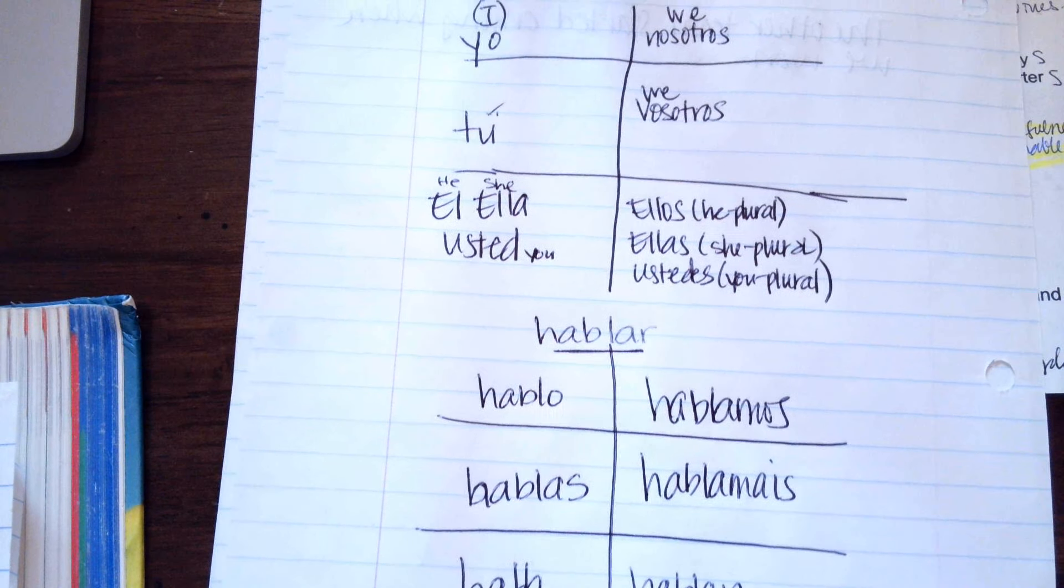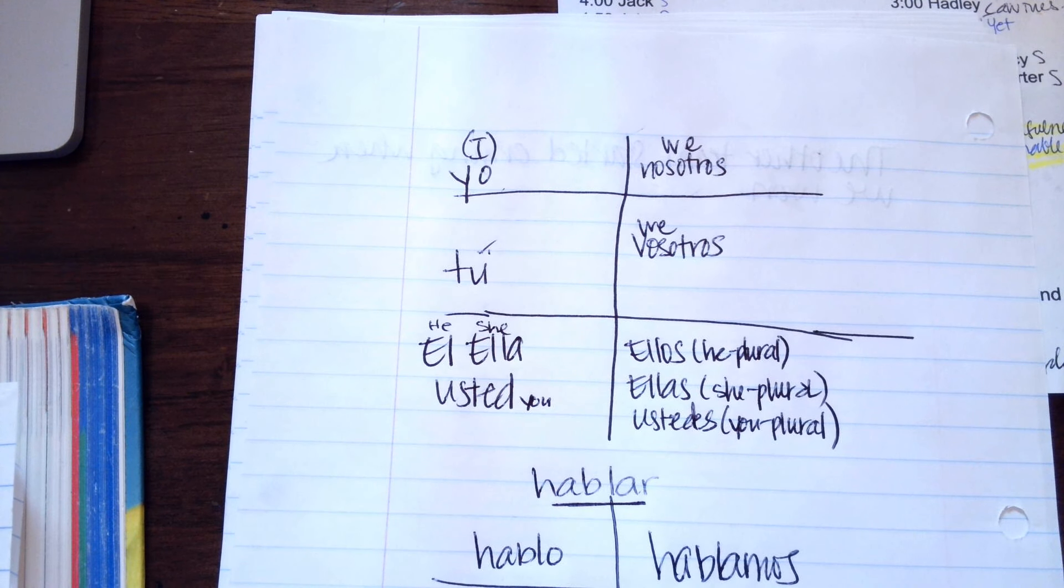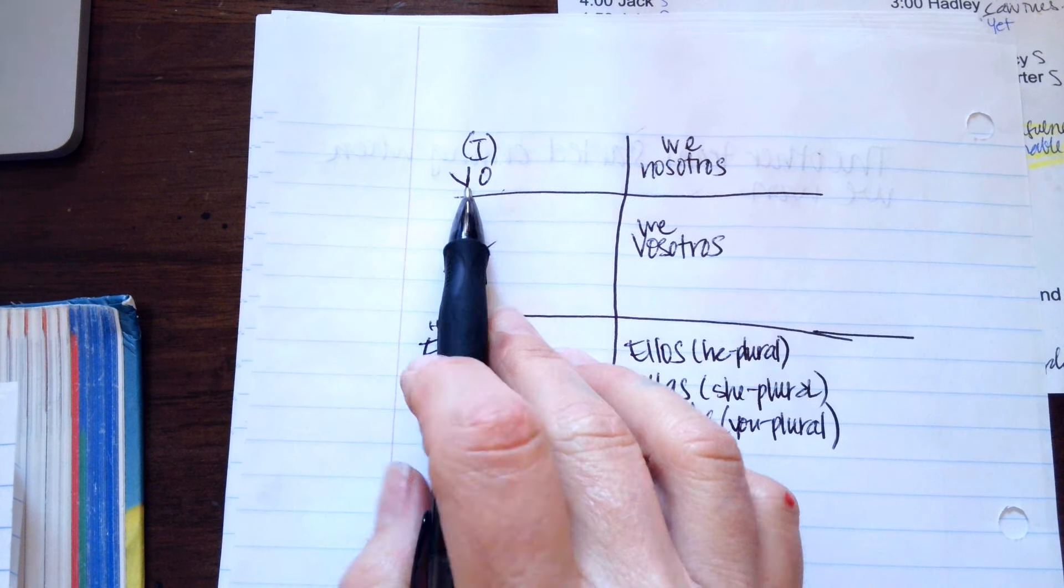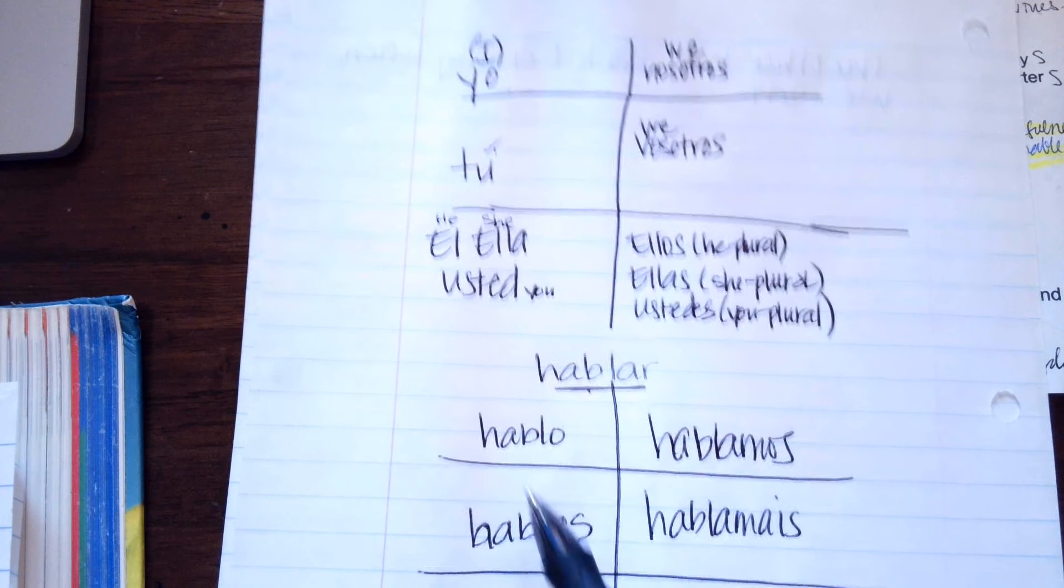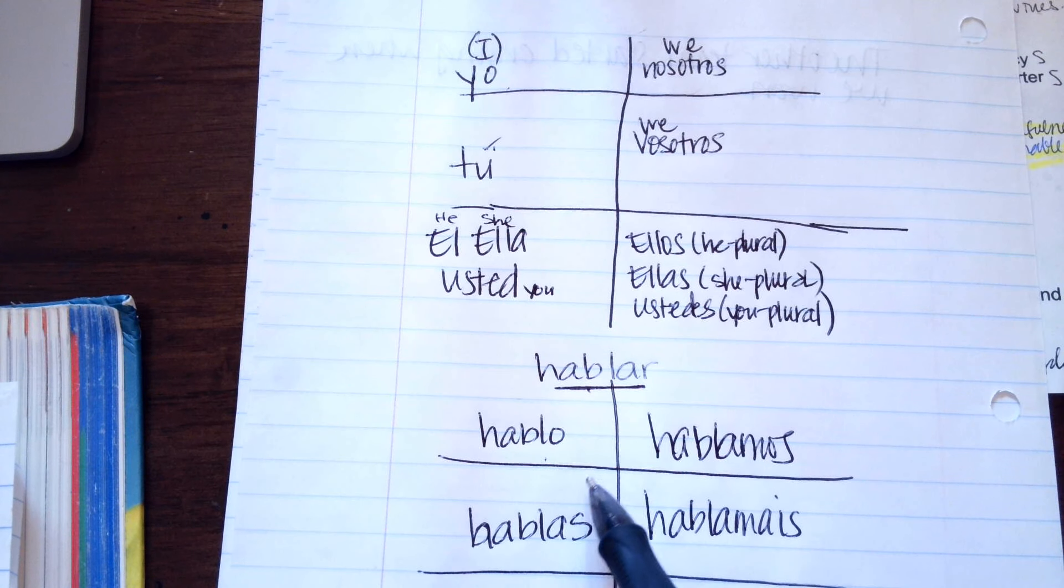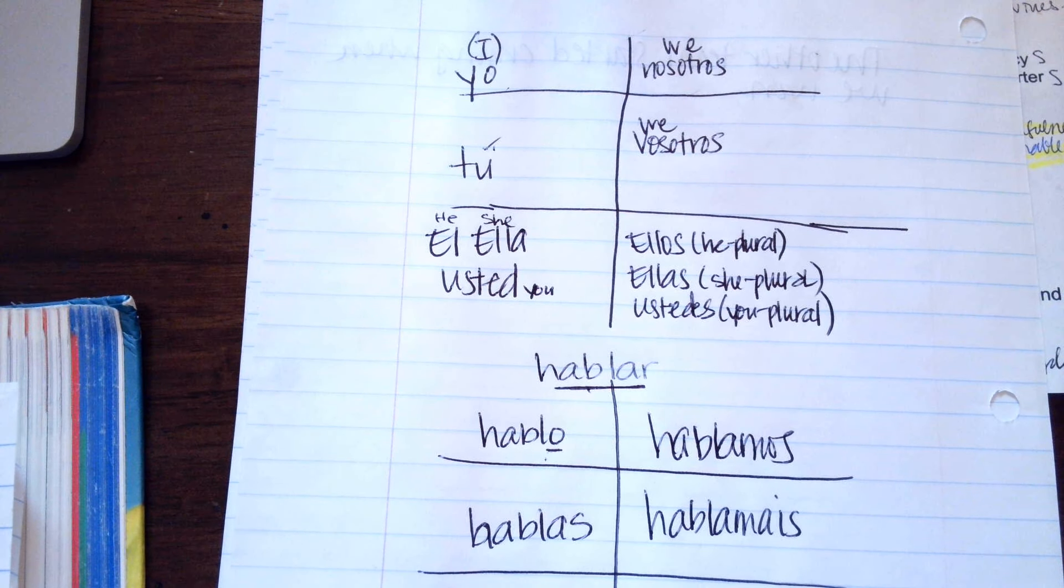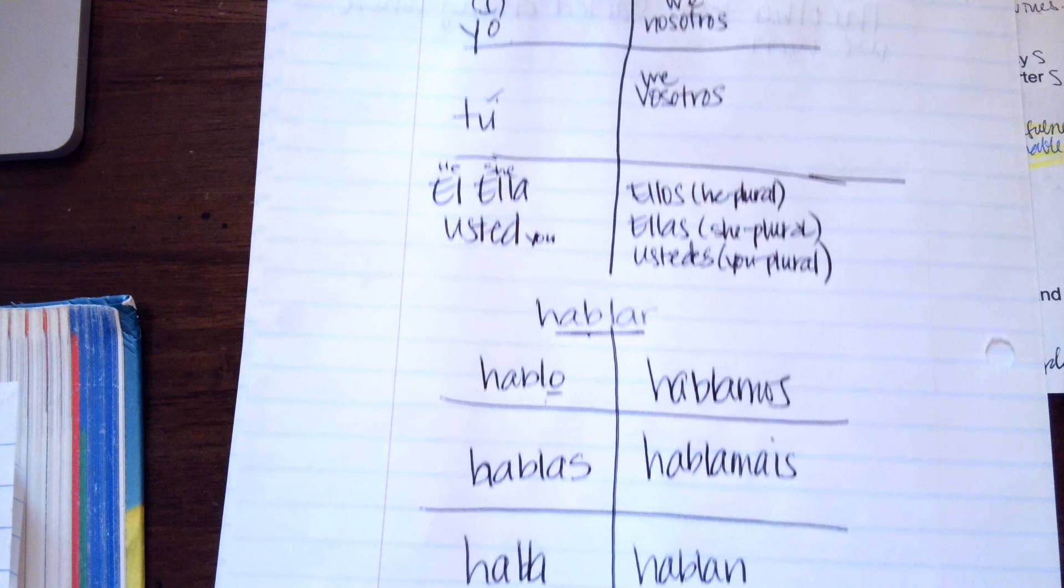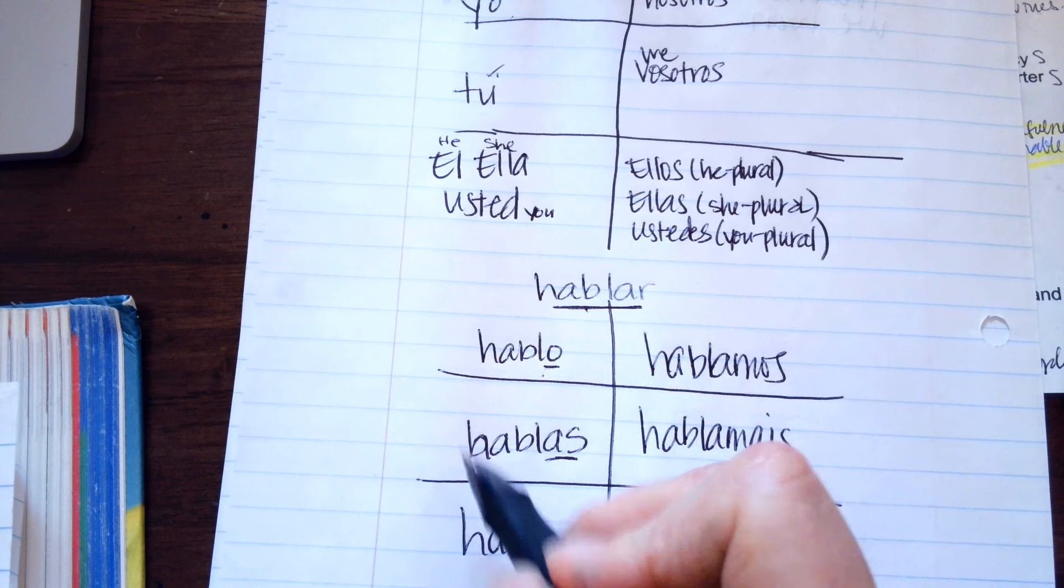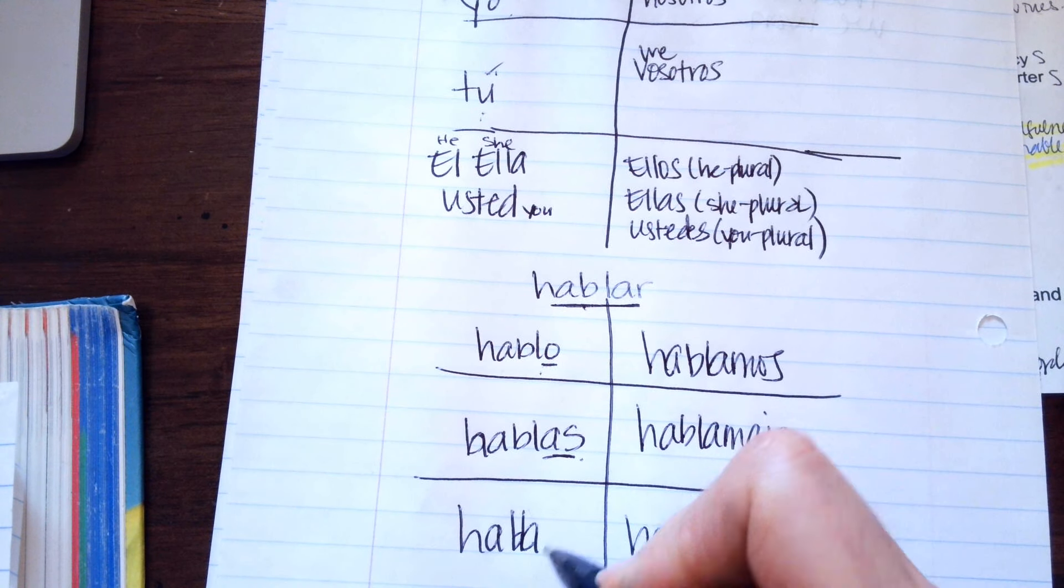When you have something that you're saying, if you're going to say I speak Spanish, you don't say yo hablar español. You just say hablo español. And because it ends in an O, that is how you say I speak. If you were to say hablas, that means you speak.